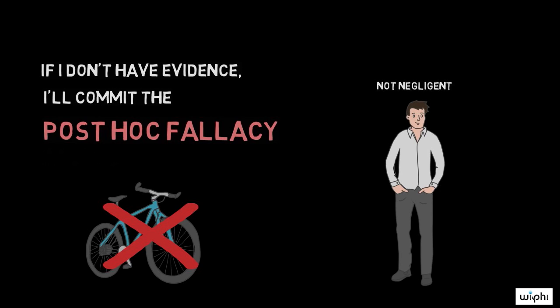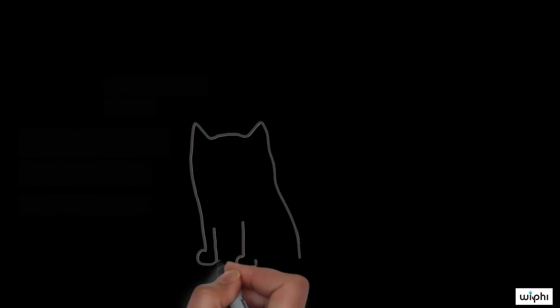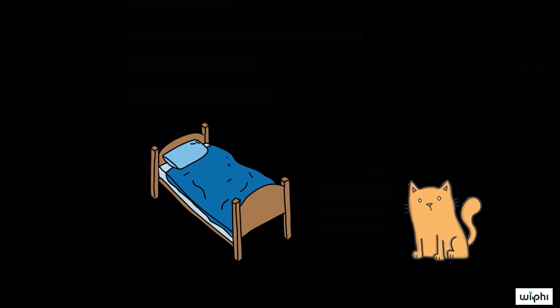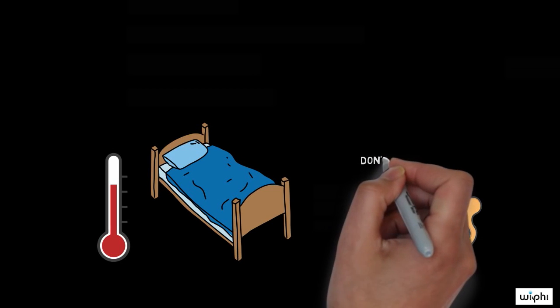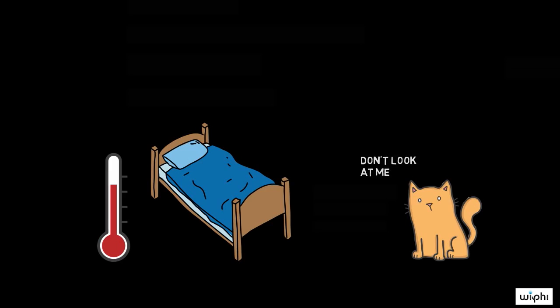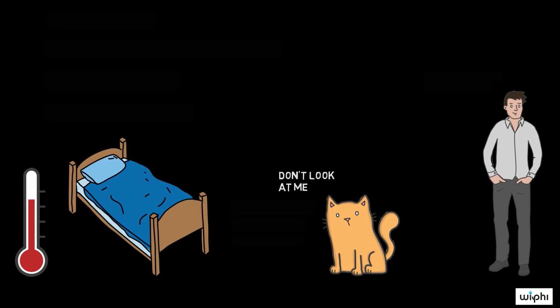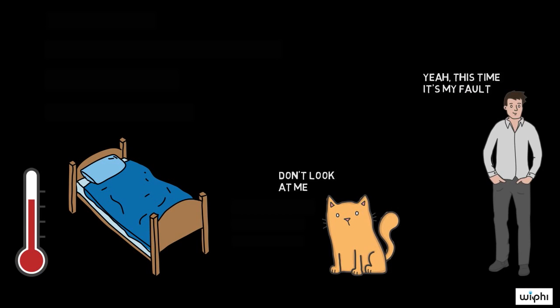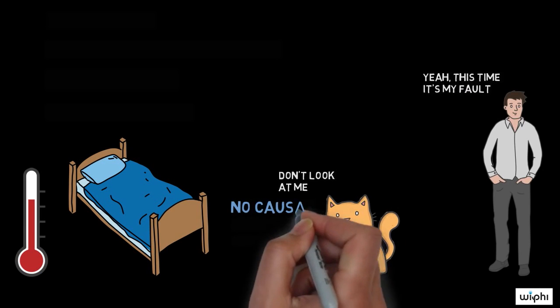We can see now that this after this, therefore, because of this reasoning is defective. A cat might have scratched you right before you got a fever, but that doesn't mean that the cat's scratch caused your fever. It's perfectly possible that the flu that your roommate recently had was the actual cause for your fever. The sequence of the two events alone does not establish a causal relation between them.